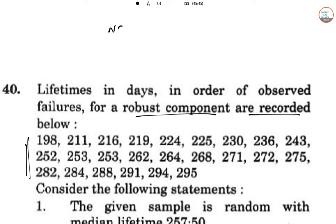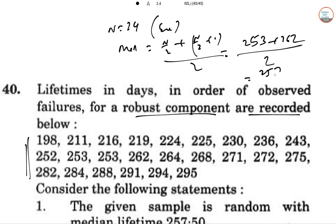From the given observation, n equals 24, which is an even number of observations. So median equals the average of n by 2 and n by 2 plus 1th observations. That's 253 plus 262 in ascending order divided by 2, so median equals 257.5.